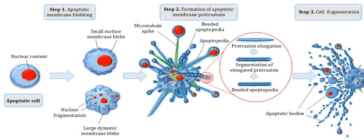Blebbing is one of the defined features of apoptosis. During apoptosis, the cell's cytoskeleton breaks up and causes the membrane to bulge outward. These bulges may separate from the cell, taking a portion of cytoplasm with them, to become known as apoptotic blebs. Phagocytic cells eventually consume these fragments and the components are recycled.